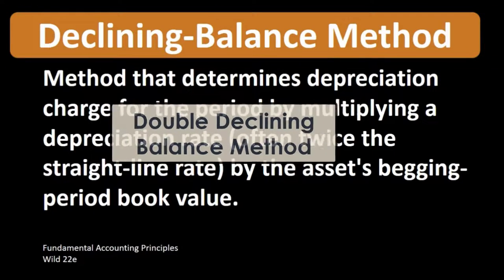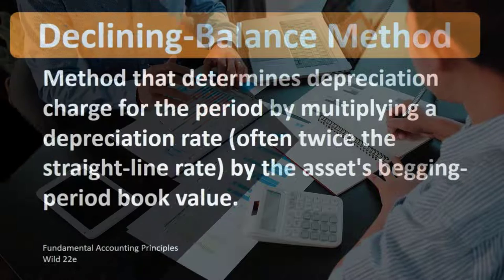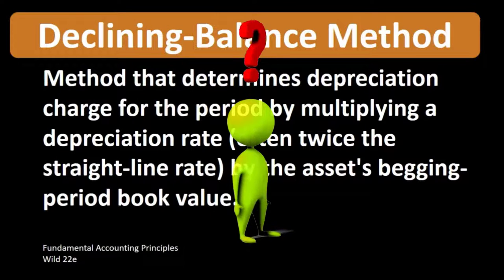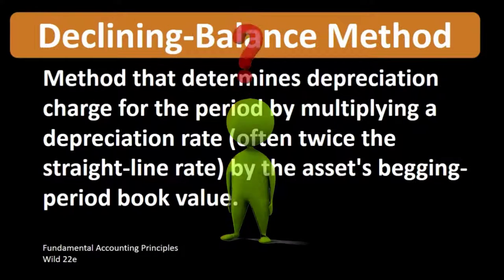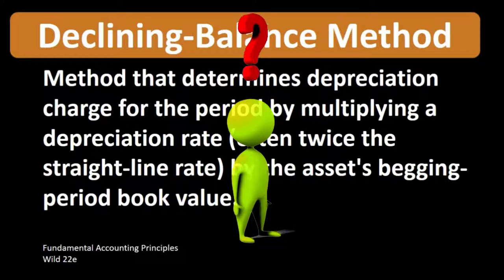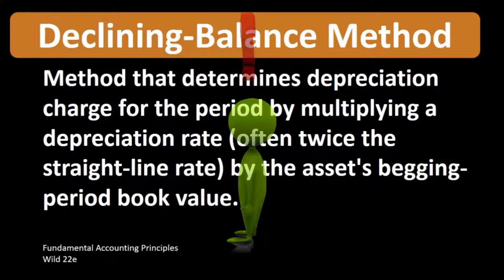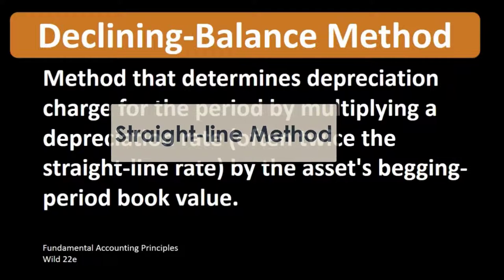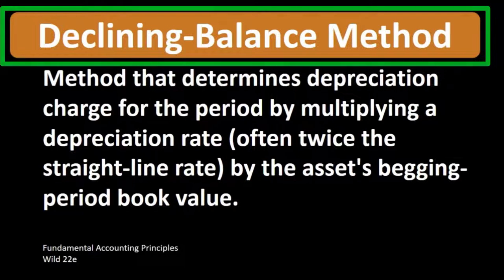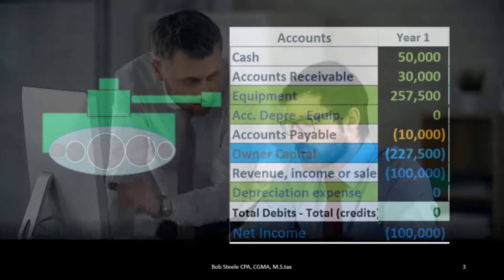In order to understand the declining balance method, most commonly the double declining balance method, we first need to compare it to the straight-line method. We need to understand what depreciation is, what types of assets are depreciated, why we use it, what the baseline straight-line method is, and what the declining balance method means in relation to straight-line.